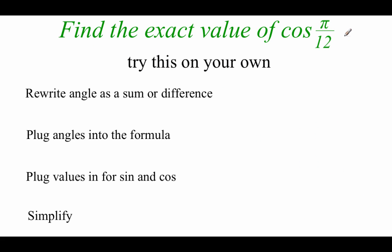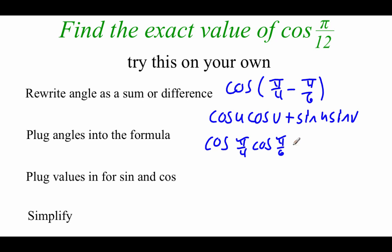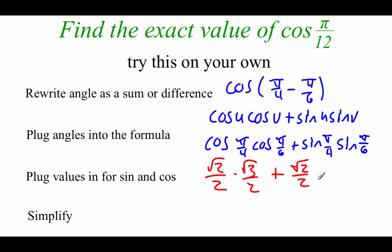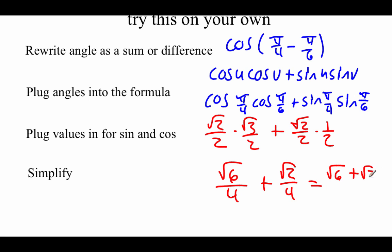Very similar problem: this one is the cosine of pi over 12. You can pause the video and try it yourself. We already broke down pi over 12 earlier, so I'll use pi over 4 minus pi over 6 again. This uses the cosine difference formula: cosine of U times cosine of V plus sine of U times sine of V. Replacing U and V: cosine of pi over 4 times cosine of pi over 6, plus sine of pi over 4 times sine of pi over 6. That's root 2 over 2 times root 3 over 2, plus root 2 over 2 times 1/2, giving root 6 over 4 plus root 2 over 4, which equals root 6 plus root 2 all over 4.